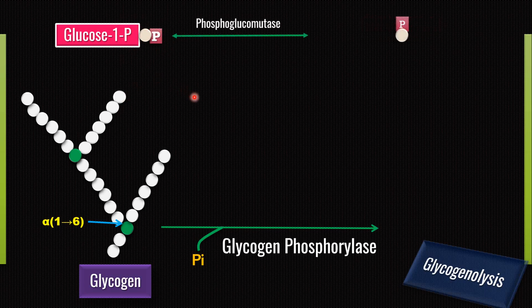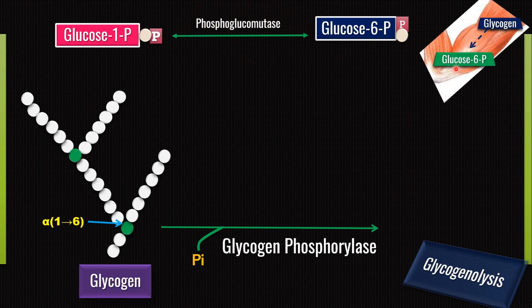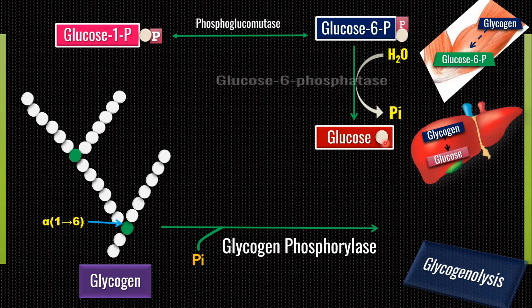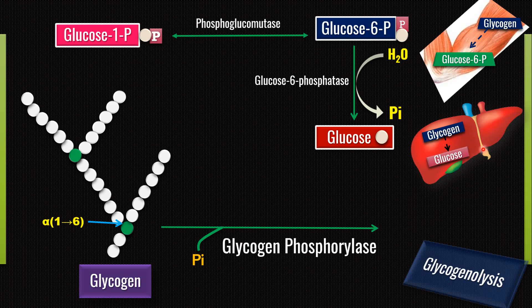Glucose-1-phosphate is isomerized to glucose-6-phosphate with the help of the enzyme phosphoglucomutase. Please remember, glucose-6-phosphate is the end product in muscle — glycogen is broken down to glucose-6-phosphate and it will enter glycolysis to produce ATP. In the liver, glucose-1-phosphate can be converted to glucose with the help of glucose-6-phosphatase. This enzyme is absent in muscle, so muscle cannot yield free glucose, whereas liver glycogen can be converted to glucose and released to other tissues through circulation.